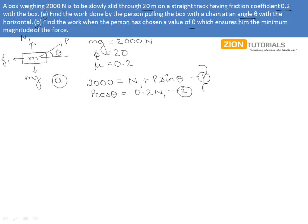Now, from both of these equations, we can solve the value of P simply by putting the value of N from one into the other, giving us 400 over cosθ plus 0.2 sinθ. Marking it as equation number three,